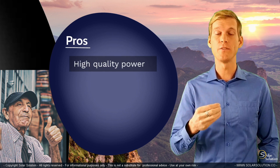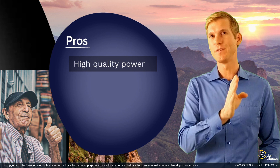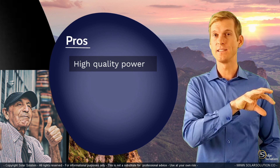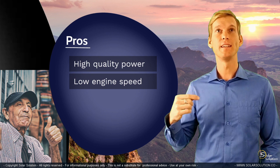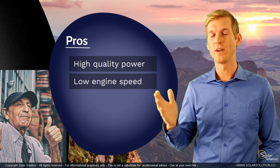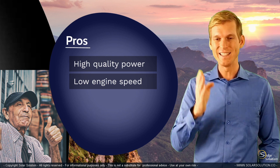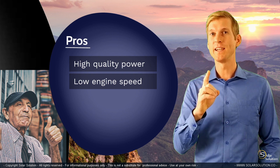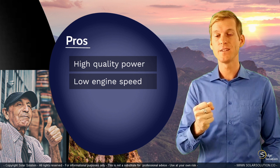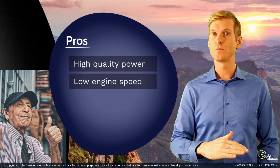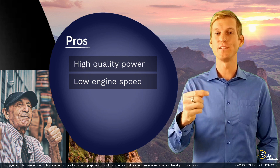The second clear advantage of inverter generators is that since the AC power generation by the inverter is decoupled from the first step where the electrical generator creates the initial AC power, you are able to run the engine at a much lower engine speed while still maintaining the correct frequency and power output created by the inverter. This is a great benefit because a conventional generator needs to run at the same engine speed all the time to maintain frequency. So if you require less power, the inverter generator can reduce its engine speed, resulting in substantially less noise output.